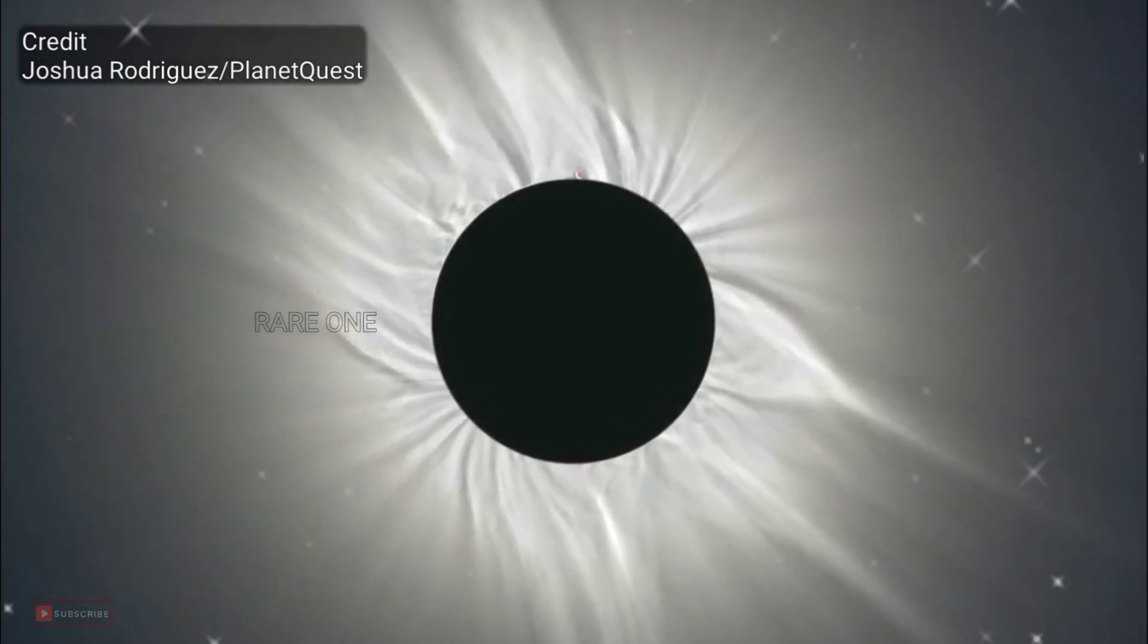Direct imaging is a technique used in astronomy to capture images of distant objects in space, such as planets, stars, or galaxies, by directly detecting the light they emit or reflect. This involves using telescopes equipped with specialized instruments to block out the overwhelming glare of nearby stars and focus on the light coming from the object of interest. This technique allows astronomers to study the properties and characteristics of celestial bodies in detail.